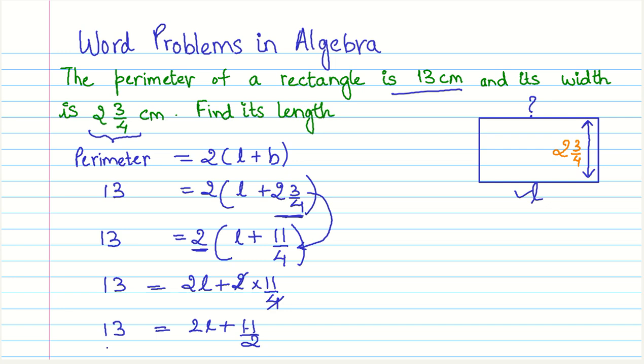So, we have our equation now. 13 equals 2L plus 11 by 2. Now, let us proceed to solve this further. So, I will just write the equation again here. So, we have twice of L plus 11 by 2 equals 13. This was our equation that we formed there.